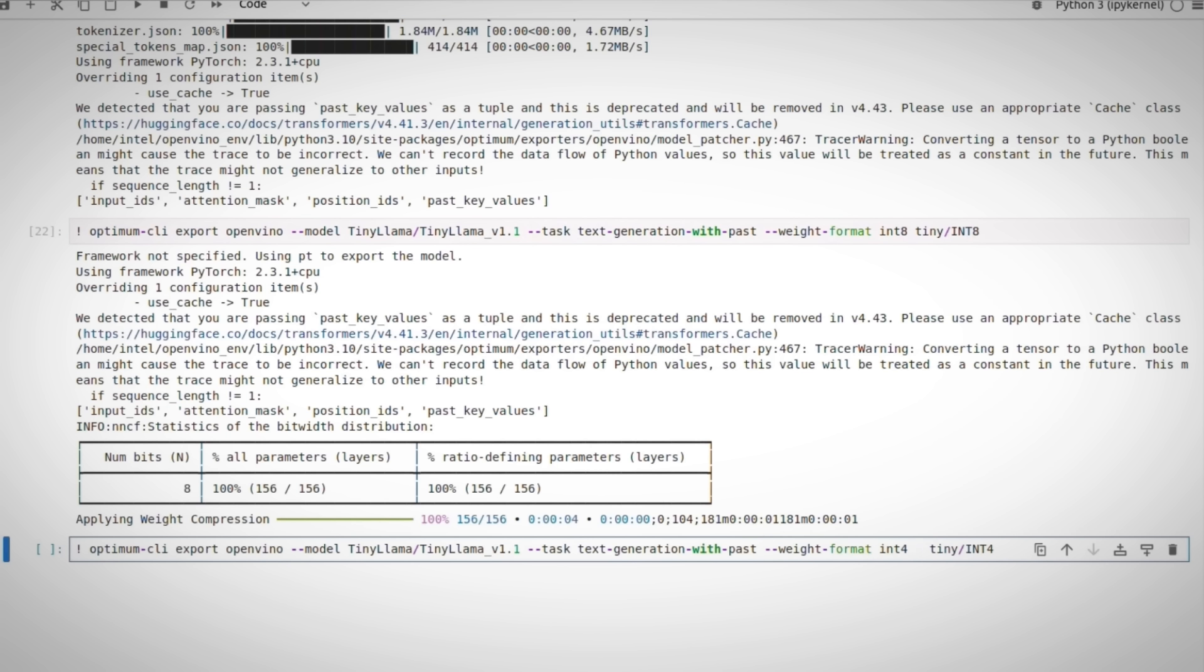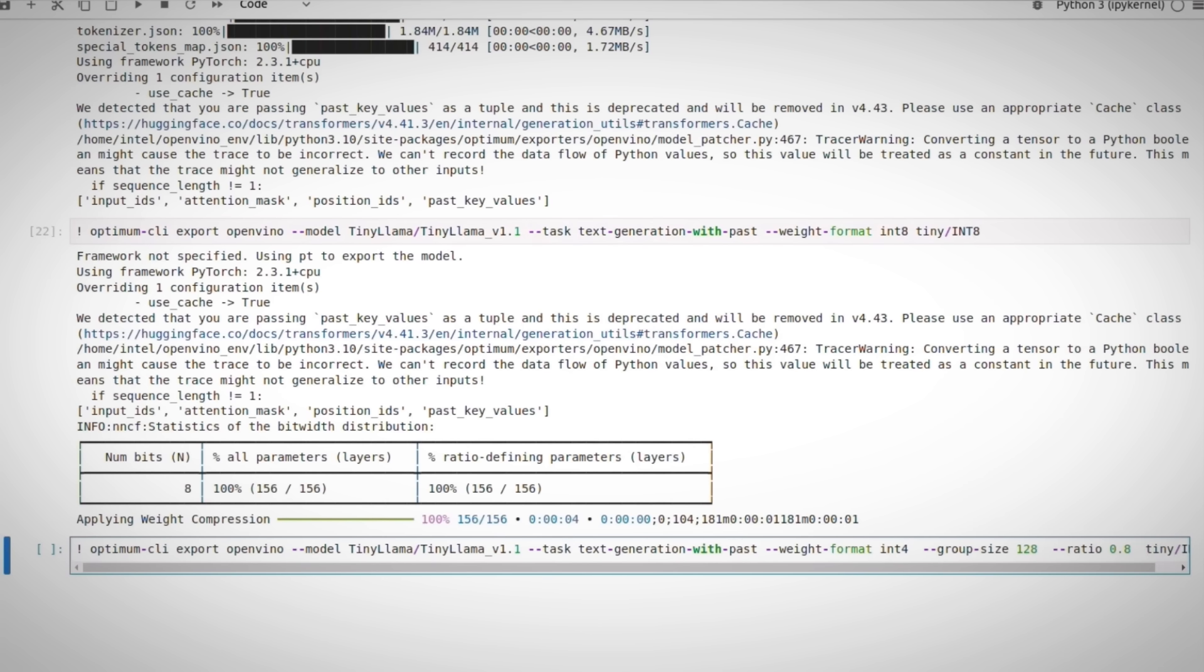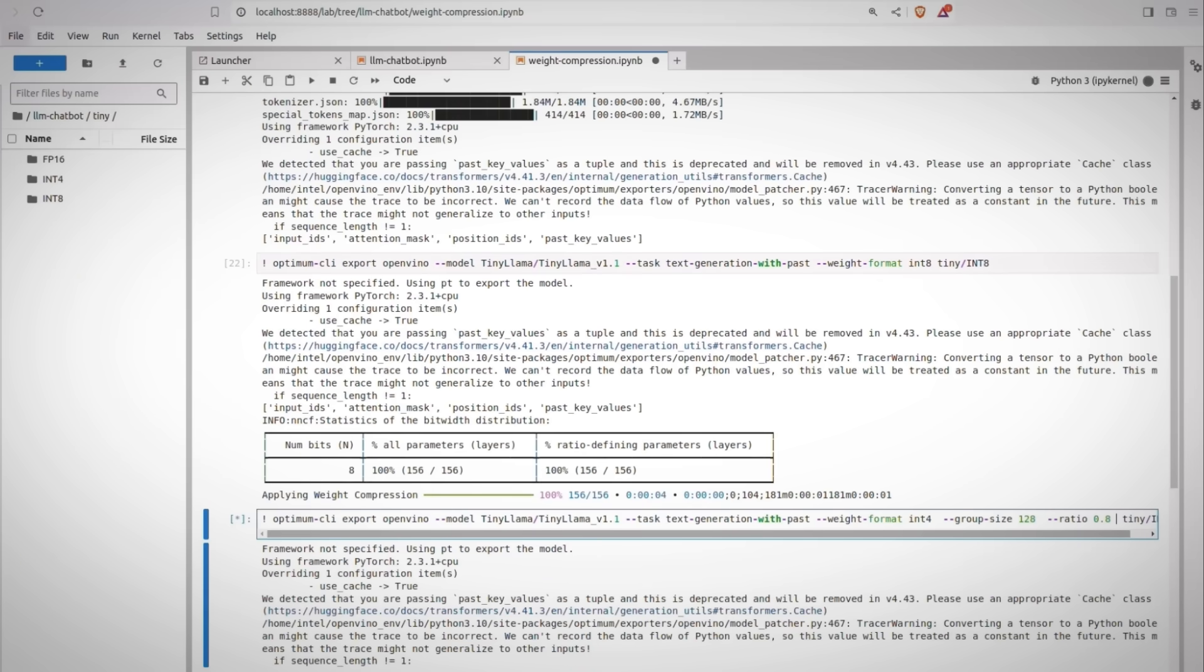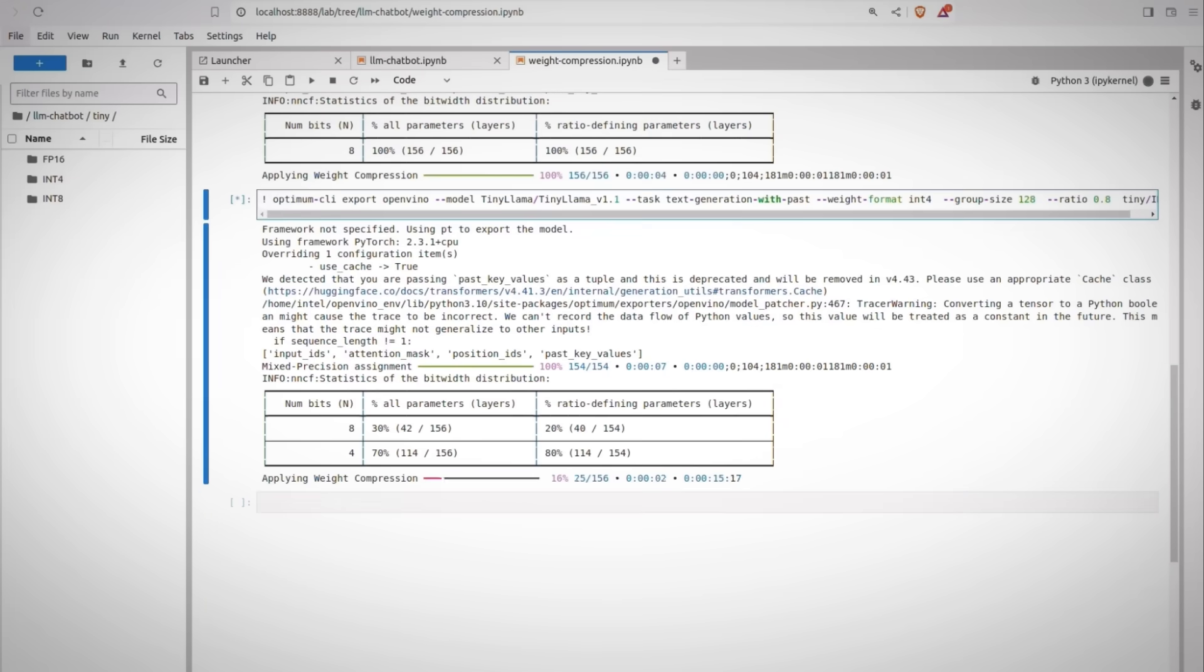The more you group together, you should get more compression, but with the risk of less accuracy. I'm asking for a group of 128 and for a ratio of 0.8. So 80% of my weights should be INT4 and the rest INT8. And let's check the sizes.